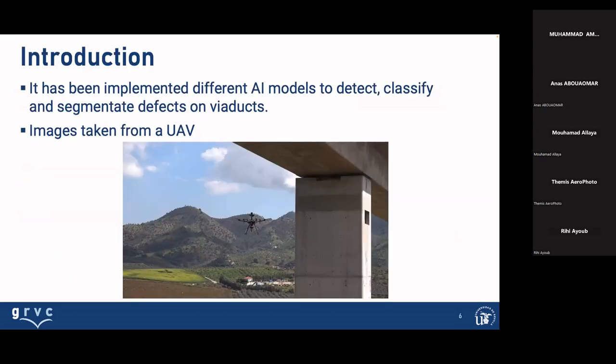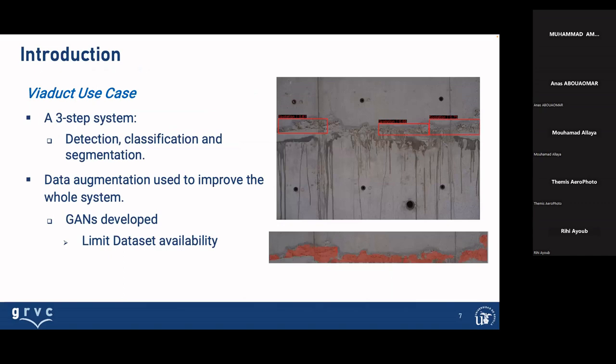We are speaking about the implementation of different artificial intelligence models to detect, classify, and segment defects in viaducts. All the images we are taking from UAVs, and concretely the UAV of Catech. In the viaduct use case, we have a three-step system for detection, classification, and segmentation, with data augmentation used to improve the whole system. We use GANs to address the limited dataset available — specifically CycleGAN to develop and generate new images.